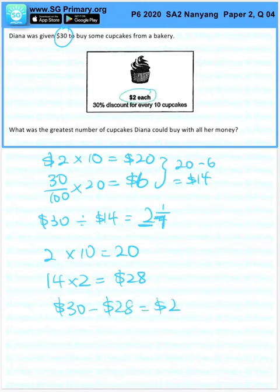So she still has money to buy 1 more cupcake. So 20 plus 1 is 21 cupcakes.